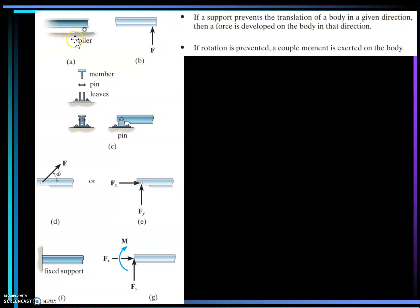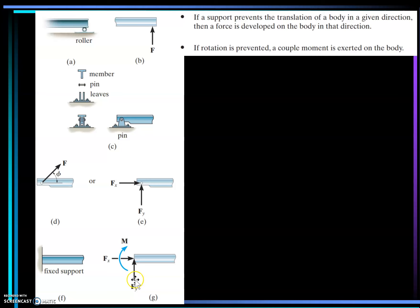Let's look at the different types of supports in 2D. A roller support prevents vertical movement and allows horizontal movement — so it produces a vertical reaction only. A pin support prevents both horizontal and vertical movement, giving two unknowns: Fx and Fy, or a resultant reaction force F at a certain angle. A fixed support prevents horizontal movement, vertical movement, and rotation — meaning it develops a horizontal force, a vertical reaction, and a moment simultaneously.